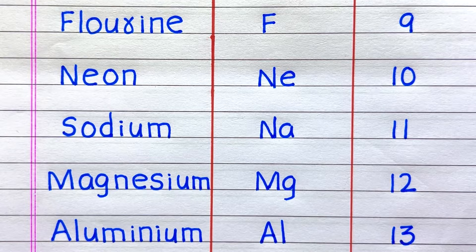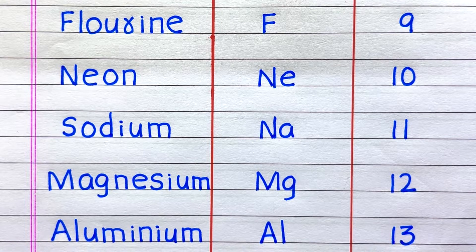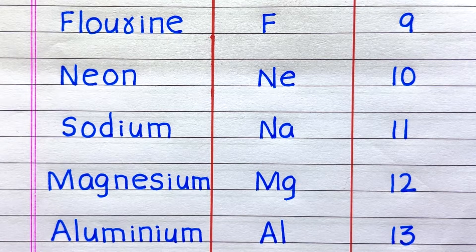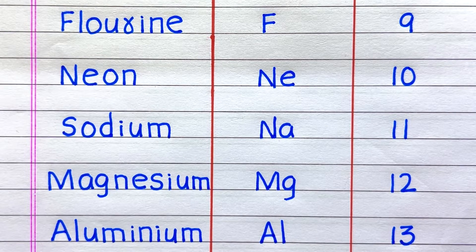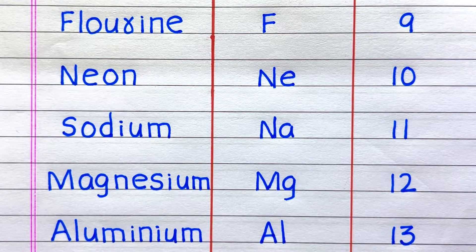The ninth element is Fluorine, symbol F, atomic number 9. Tenth, Neon, Ne, 10. Eleventh, Sodium, Na, 11. Twelfth element, Magnesium, Mg, atomic number 12. Thirteenth, Aluminium, Al, 13.